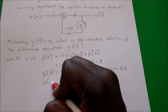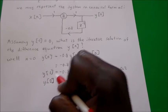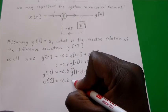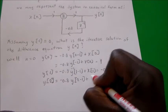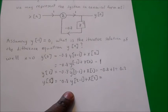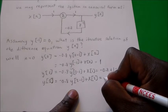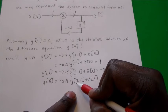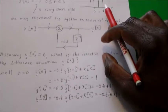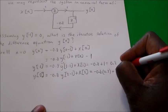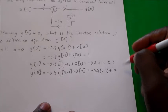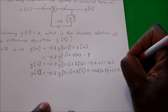For y at n = 2: y(2) = -0.8 times y(2-1) plus x(2). That gives -0.8 times y(1), which was 0.2, plus x(2) = 1. So y(2) = -0.8 × 0.2 + 1 = 0.84.